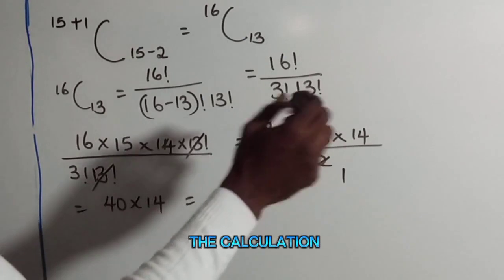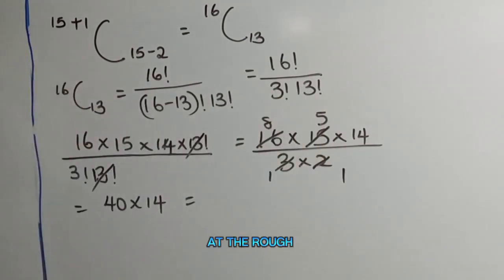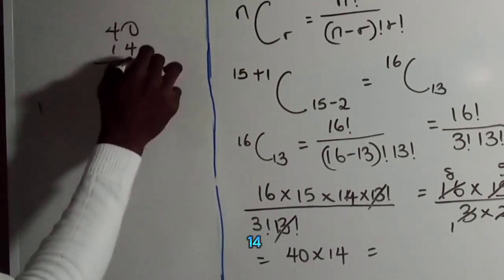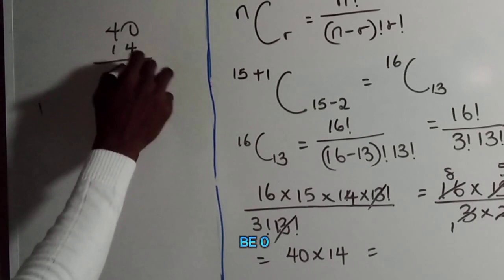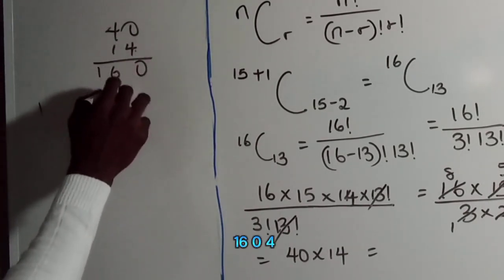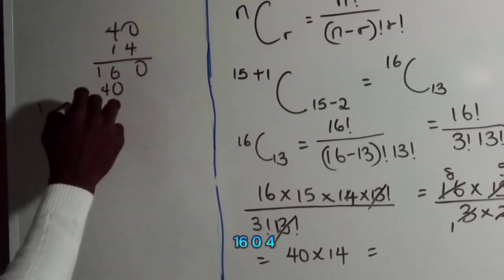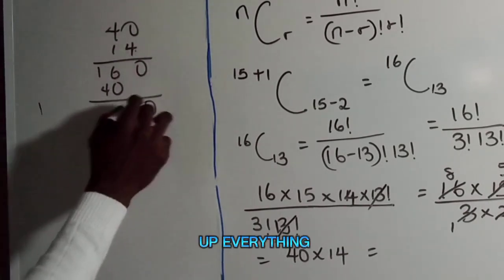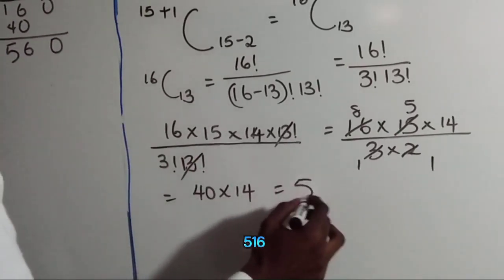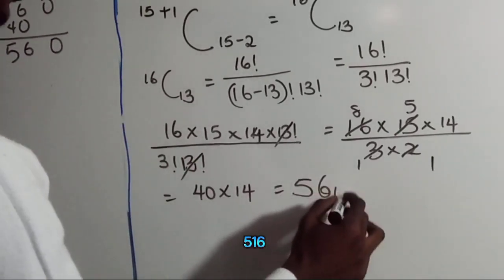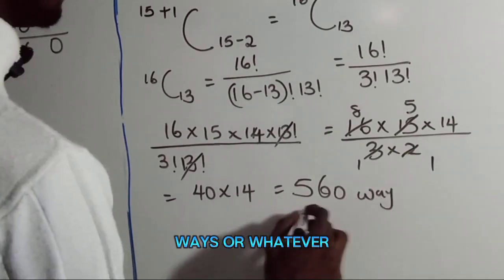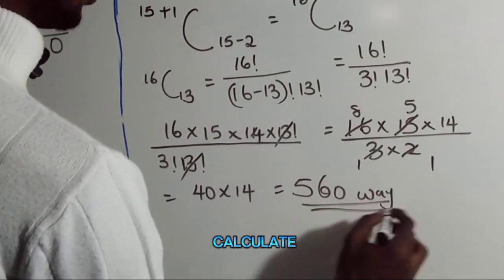Now let's complete the calculation. 40 multiplied by 14: 4 times 4 is 16, carrying through, and when we sum everything up we get 560 ways.